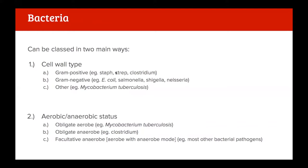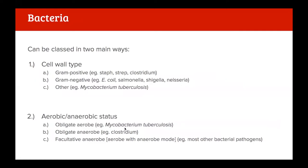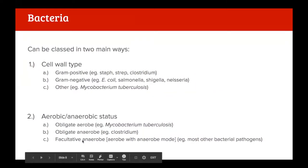Gram positives include Staph, Strep, and Clostridium - probably the three most common. Some bacteria don't fit the bill for either gram positive or gram negative; the most notable example is Mycobacterium tuberculosis. For aerobic/anaerobic status, the vast majority of disease-causing bacteria are facultative anaerobes. The only common exceptions would be Clostridium and Mycobacterium tuberculosis.